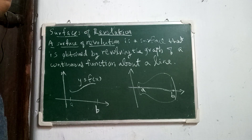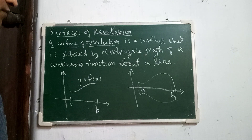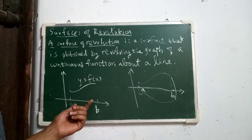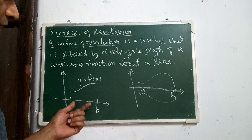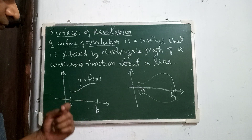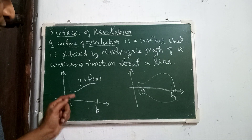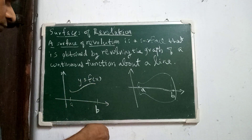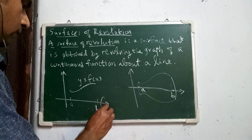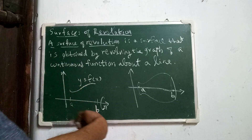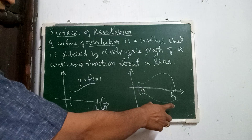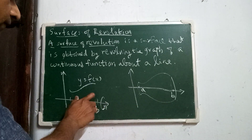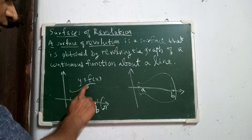Next, we will study surfaces of revolution and the surface area. What is meant by surface of revolution? Look at this figure. Suppose you have a function y equal to f of x defined on an interval a, b. This is the graph of f. I am going to rotate y equal to f of x about the x-axis — rotate the whole figure about the x-axis. What you get is a surface like this. This is the surface of revolution of this graph of f.